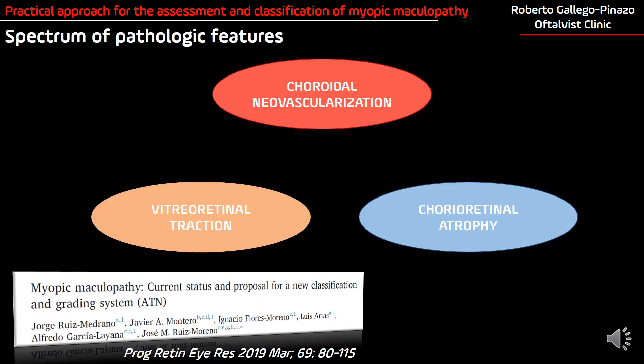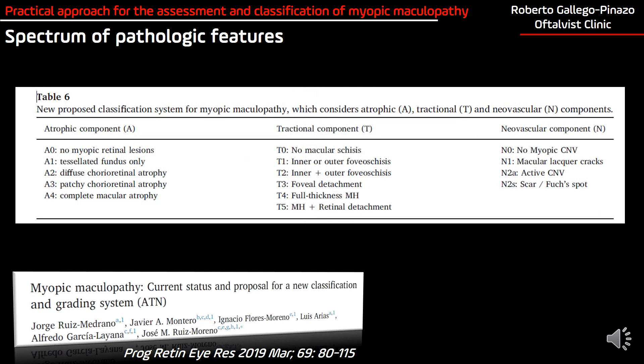In summary, in patients with high myopia we can find atrophy, traction, and neovascularization. Thanks to the elegant work published by Ruiz Moreno, we can all classify exactly the same cases that we see in our routine clinical practice — in a very easy way: atrophic component A, tractional component T, neovascular component N, with each one of the stages previously described.